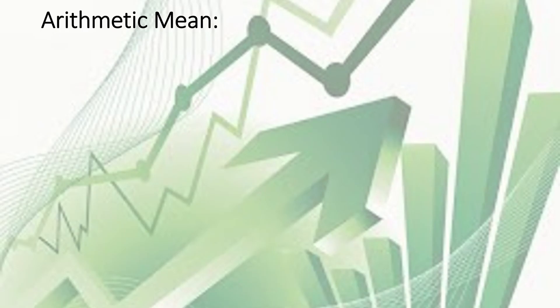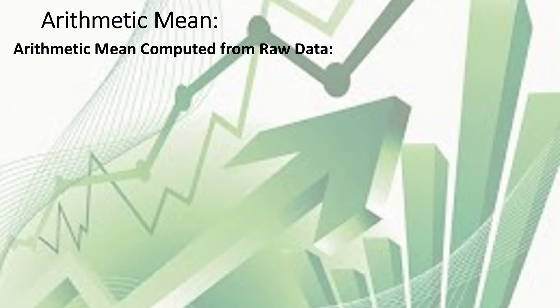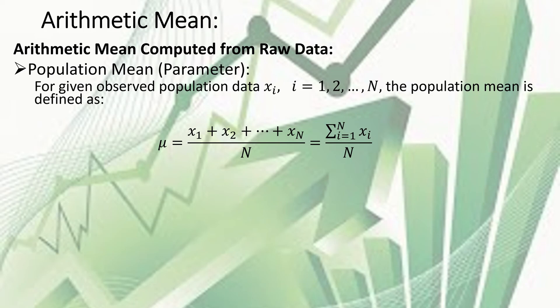Let's talk about arithmetic mean first. It's a very simple measure and most students know how to do it. First, arithmetic mean computed from raw data. We consider two types of data: population data and sample data. If we compute a characteristic from population data, it is termed as a parameter. If we do the same from a sample, we call it a statistic or estimator. The population mean is denoted by mu, with population size N. The formula is: summation of xi divided by total number of observations.